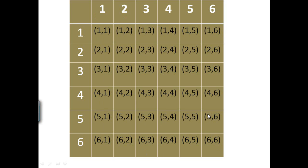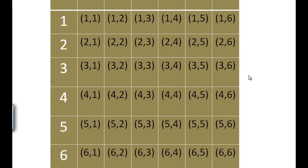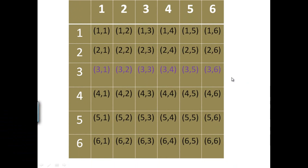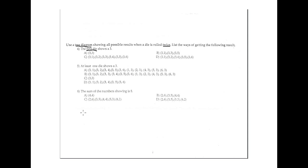For question 4, determine the combinations where the first die shows a 3. The tree in the first position gives us 6 combinations: (3,1), (3,2), (3,3), (3,4), (3,5), and (3,6). The answer is option C.